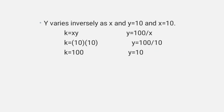Another example: Y varies inversely as X, and Y is 10 when X is 10. Find the constant: K equals X times Y, so K equals 10 times 10, which is 100. Now substitute: Y equals 100 over X. With X equals 10, Y equals 100 divided by 10, which is 10.